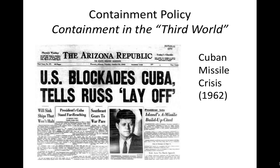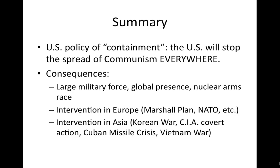As Cuba aligned itself with the Soviet Union and became communist, a missile crisis emerged. Cuba agreed to allow the Soviet Union to install missiles on the island. The United States discovered this through intelligence operations, and for several days there was a standoff — the U.S. Navy encircled Cuba to prevent further arms shipments, and the country became deeply anxious about whether this would lead to war with the Soviet Union. In the end, the Soviets agreed to remove their missiles from Cuba, and the crisis was averted.